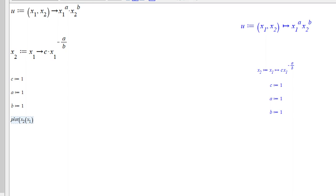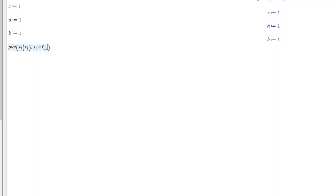We need to pick a range. Let's say that x1 goes from 0 to 5 for example. And that will give us a nice indifference curve. You can see that it's strictly decreasing and convex.